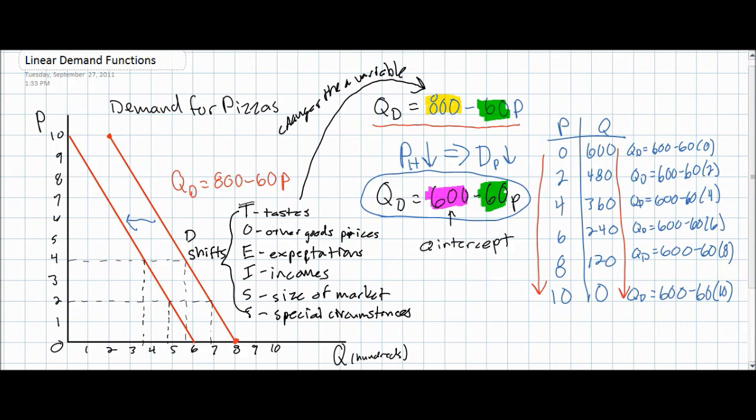That concludes part two of our lecture on linear demand functions. In part three, we will explore factors that can change the B variable in a demand equation, which, as you may understand already, will change the slope of the demand curve, indicating a change in the responsiveness of consumers to prices.